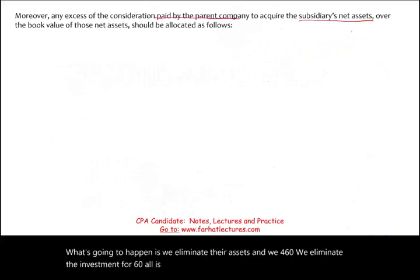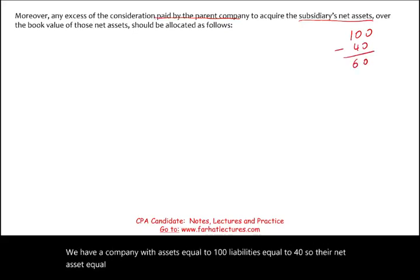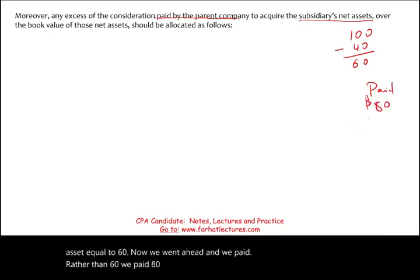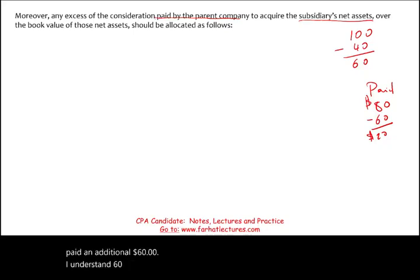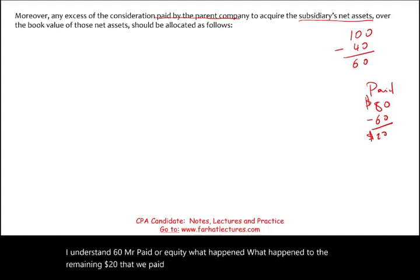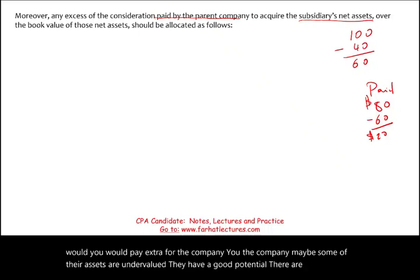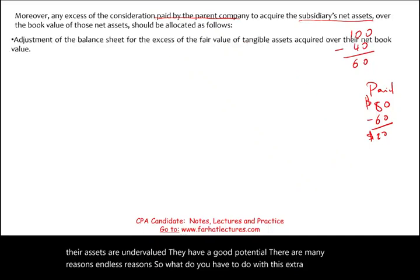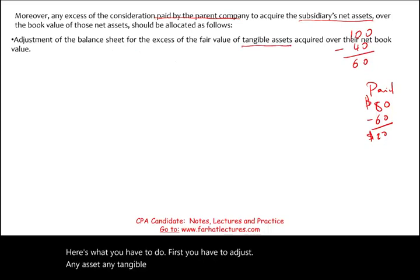Now assume we have a company with assets of $100, liabilities of $40, net assets of $60 — but instead of paying $60, we paid $80. So we paid an additional $20 above their equity. Why might we pay extra? Many reasons: maybe their assets are undervalued, they have good potential. First, we adjust any tangible asset acquired at above book value — for example, land on the books at $10 but fair value is $12 means $2 goes toward land.